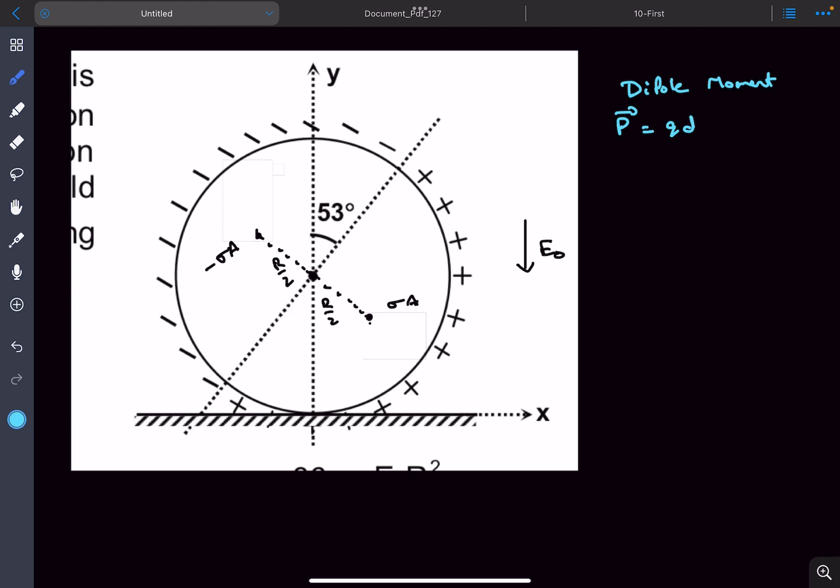The dipole moment is σ multiplied by the surface area of the hemisphere (2πR²) times the separation distance R. The direction of the dipole is from the negative charge to the positive charge.